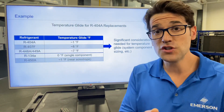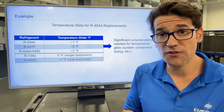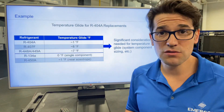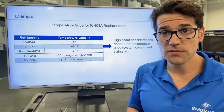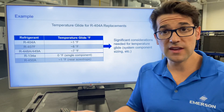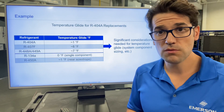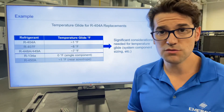For an example, if you're checking superheat on a medium temp system for eight degrees superheat and you use the bubble point, you may think you have eight degrees superheat, but you may actually have zero degrees superheat.